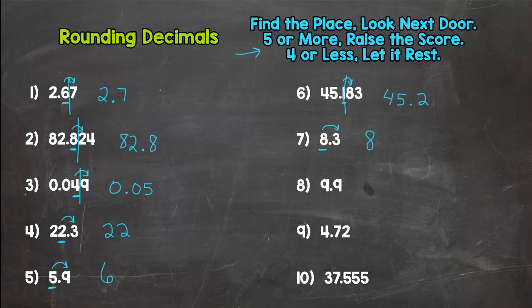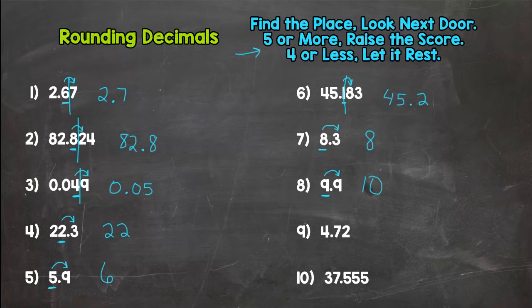For number eight, nearest whole number again. Are we going to round up to ten, or is nine and nine tenths closer to nine? That nine says round up, so nine and nine tenths rounds to ten.